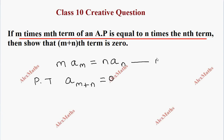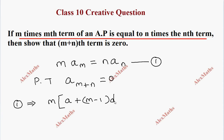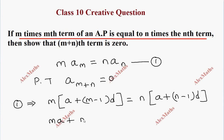This is given. Given: M into A_M, using the formula a plus (M minus 1) into D, equals N into A_N, which is a plus (N minus 1) into D.